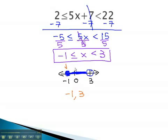Because we have a closed dot, or equal to, we use a square bracket on negative 1. 3 is an open dot, strictly less than, so it gets a curved bracket.